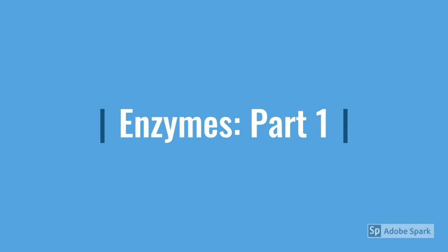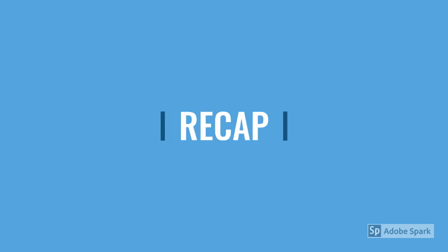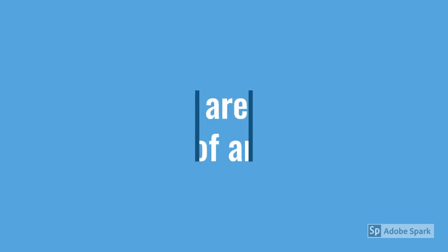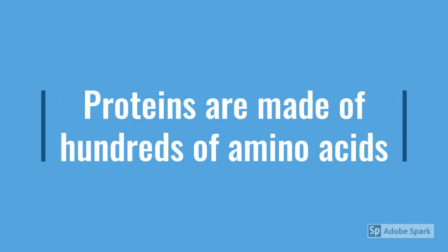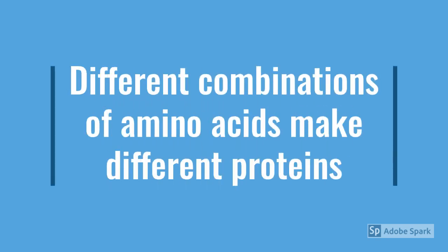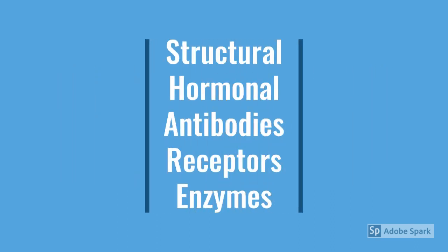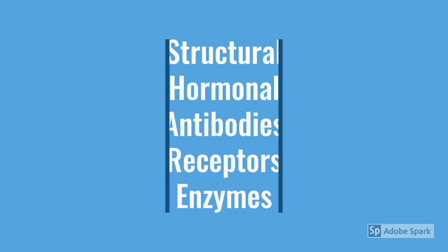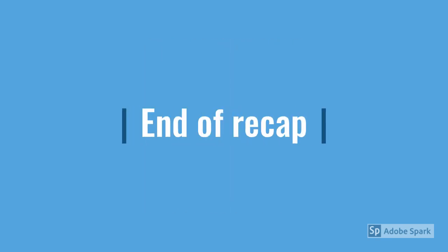Hello guys, welcome back to Easy Bio. Today's video is going to be the first part about enzymes. But first, let's do a recap from my previous video. Enzymes are proteins, and proteins are made up of hundreds and hundreds of amino acids. Arranging the amino acids in different ways makes different types of proteins — structural, hormonal, antibodies, receptors, and enzymes. You can remember them by the word SHARE. To learn more, check out my video on proteins, which I'll leave in the description below.